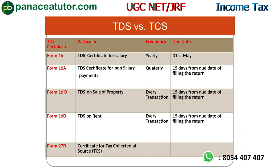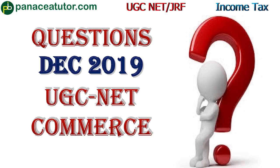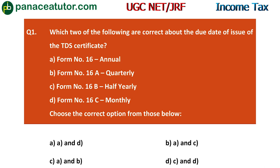From this same chart, two questions appeared in the December 2019 UGC NET Commerce paper. Question 1: Which two of the following are correct about the due date of issue of the TDS certificate? The options given are Form 16, 16A, 16B, and 16C.